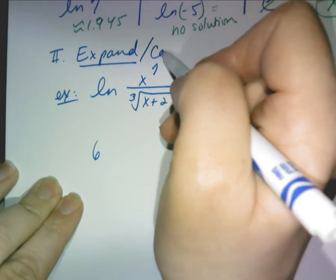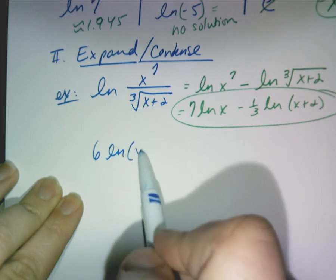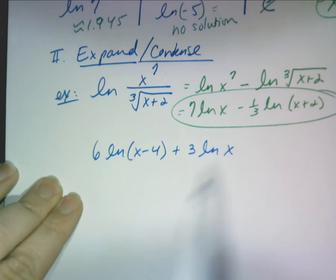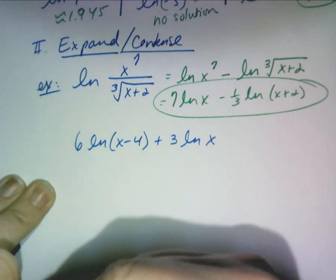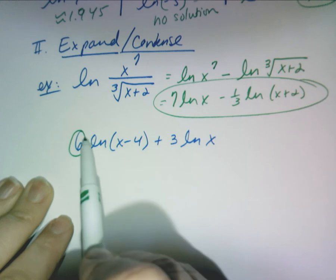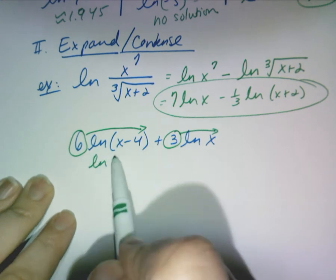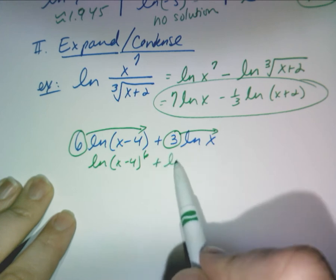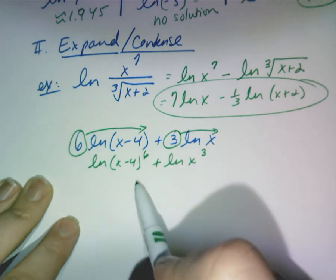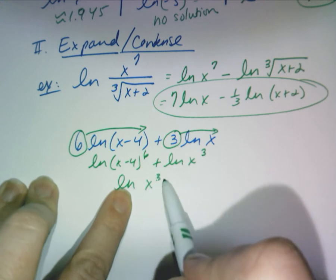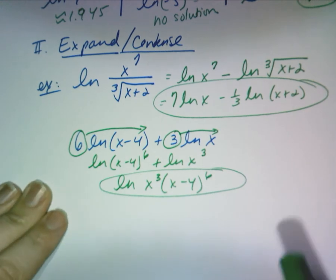Now condense: 6 ln(x minus 4) plus 3 ln(x). Always do the exponent parts first — the 6 becomes an exponent and the 3 becomes an exponent, giving ln(x minus 4) to the sixth plus ln(x cubed). When you add logs you multiply, so the final condensed form is ln of x cubed times (x minus 4) to the sixth.